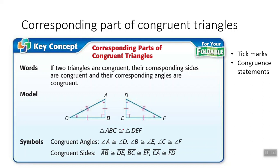The equal symbol with the little squiggly line on top is the symbol for congruence. Since letter B is written second and letter E is written second, angle B is congruent to angle E. These triangles happen to be right triangles, so instead of an arc symbol, we use the box to indicate a 90-degree angle — they're both 90 degrees, so they're congruent. Finally, the third letters C and F mean angle C is congruent to angle F, noted by two arc marks on each.